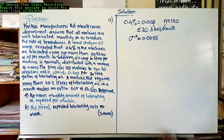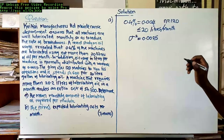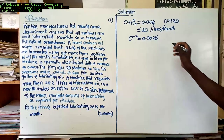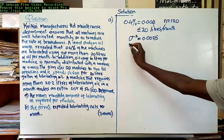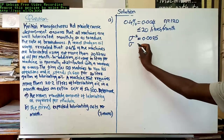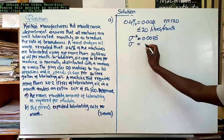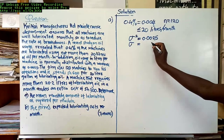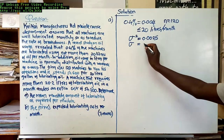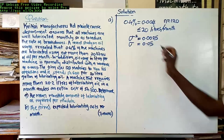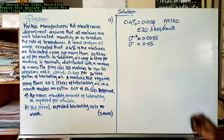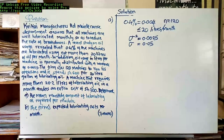From the variance we can directly get the standard deviation, which is the square root of the variance. So sigma is equal to the square root of 0.0025, and this gives us 0.05.